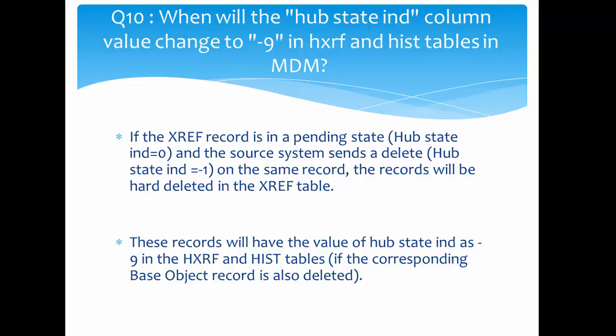The next and last interesting question is: when will the hub state indicator column value change to minus nine in the history XREF and history table in MDM? The valid hub state indicator values are 1, 0, and -1 — representing active, pending, and deleted respectively. So where does minus nine come from? If an XREF record is in a pending state (hub state indicator = 0) and the source system sends a delete (hub state indicator = -1) on that same record...